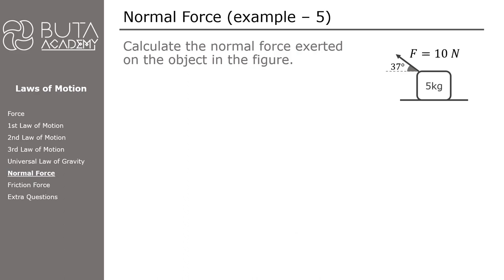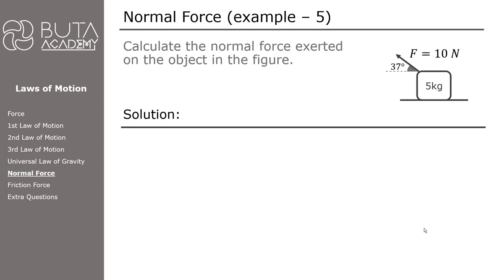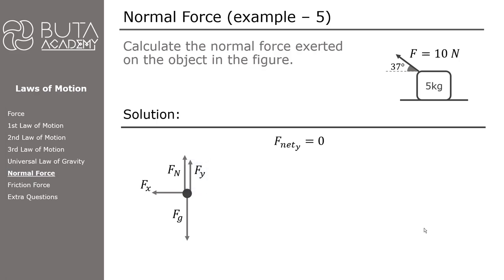The only difference in Case 5 is the direction of the applied force, so the solution will also have a small difference. In the free body diagram we draw the force of gravity and the normal force. When resolving the applied force F into its components, unlike the previous question, Fx will point to the left and Fy will point upwards. The net force on the y-axis is zero again, and we choose upward as the positive direction.